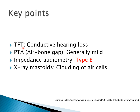The tuning fork test reveals conductive hearing loss: Rinne test is negative, Weber lateralizes to the affected ear (or the more affected ear if bilateral), and absolute bone conduction is normal. Pure tone audiogram also reveals conductive hearing loss with an air-bone gap of mild degree. Impedance audiometry is an important investigation to diagnose secretory otitis media and will reveal a Type B curve.